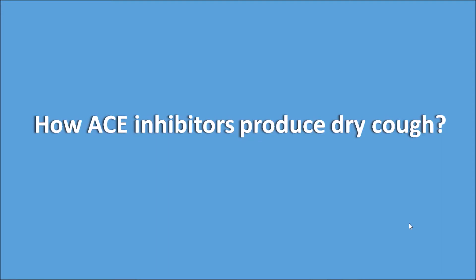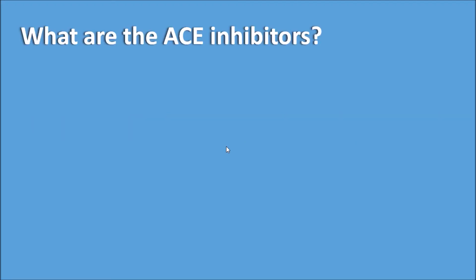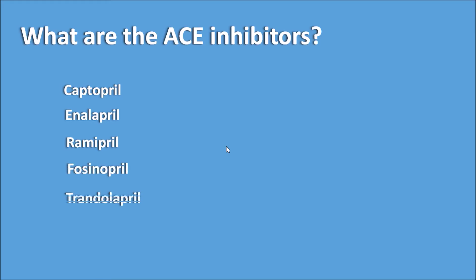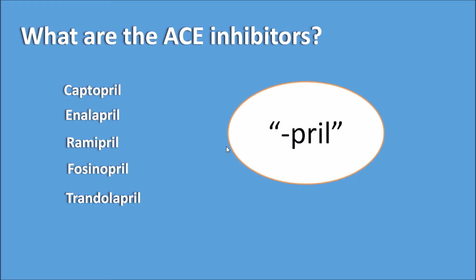In this video I am going to show how ACE inhibitors produce dry cough. First of all, let us see what are the ACE inhibitors. Drugs like Captopril, Enalapril, Ramipril, Fosinopril, and Trandolapril are few of the ACE inhibitors. You can easily observe all these drugs ending with the common suffix '-pril', which indicates these are ACE inhibitors.